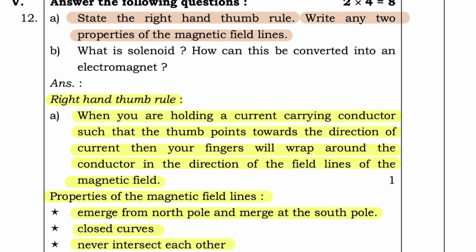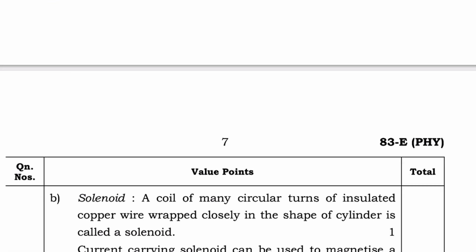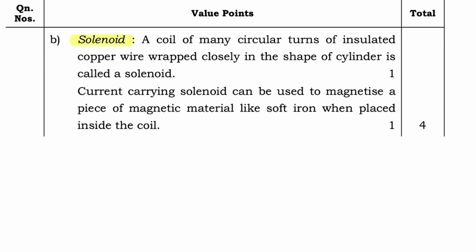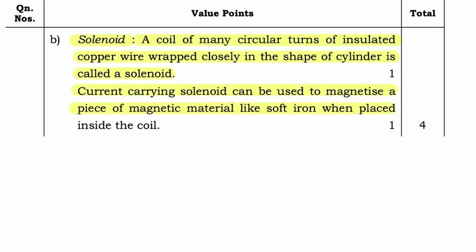Question B: What is a solenoid? How can it be converted into an electromagnet? Answer — Solenoid: a coil of many circular turns of insulated copper wire wrapped closely in the shape of a cylinder is called a solenoid. A current-carrying solenoid can be used to magnetize a piece of magnetic material like soft iron when placed inside the coil.